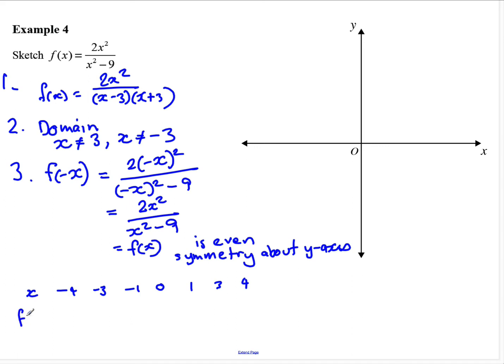Let's put some values in. This is 32 on 7, it's positive. When negative 3, well that can't happen. And neither can that. At negative 1 it's negative a quarter. And it's a negative sign. It's 0. 1 is negative a quarter again. And negative 3 can't happen. And 4, 32 over 7, and positive.